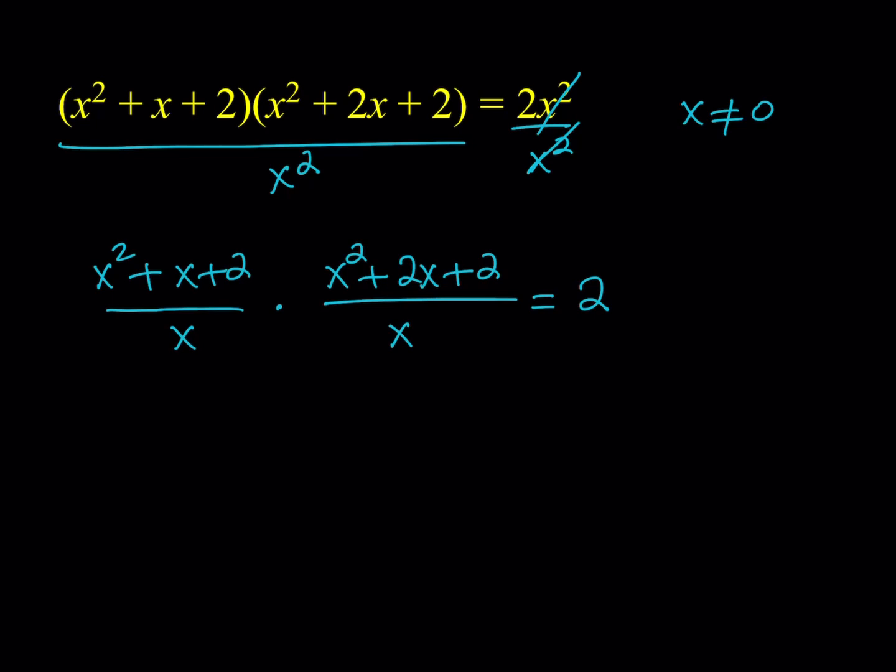Now after this, and there's a reason why we split up the x and divide like that. Because let's divide everything by x here. We're going to get x plus 1 plus 2 over x. And the other expression is going to give us x plus 2 plus 2 over x. And the product is equal to 2. Hopefully you got the method by now, but let's continue.